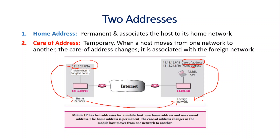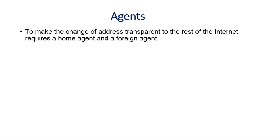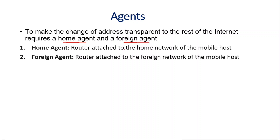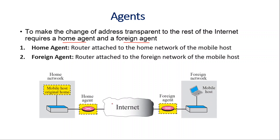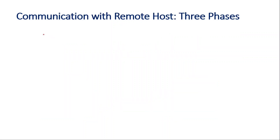The next topic is agents. To make the change of address transparent to the rest of the internet, it requires a home agent and a foreign agent. The home agent is the router attached to the home network of the mobile host, and the foreign agent is the router attached to the foreign network of the mobile host. As you can see, the home agent is a router connected to the home network, and the foreign agent is associated with the foreign network.